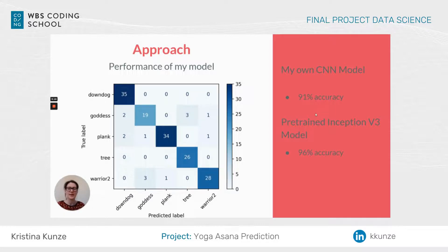Here you can see the overall performance of my model. I have around 91% accuracy. You can see here the confusion matrix where you can see the number of true and predicted labels, and which images were predicted correctly. I also used a pre-trained model, the Inception model, that gave me an accuracy of around 96%.